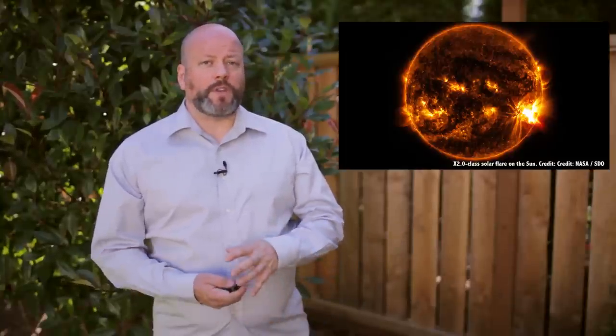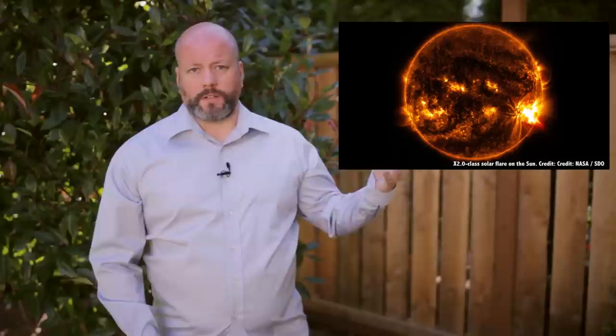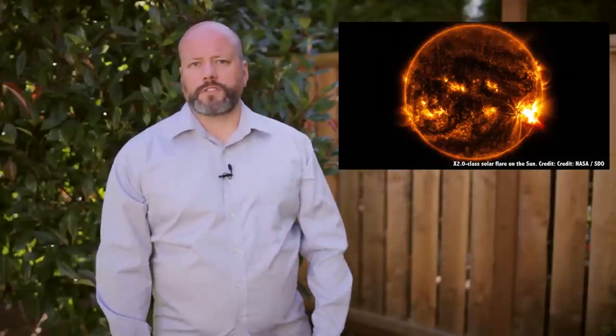Red dwarf stars are extremely violent in their youth. They blast out enormous solar flares and coronal mass ejections. These would scour the surface of any planets caught orbiting them close enough for liquid water to be present. There is some hope.